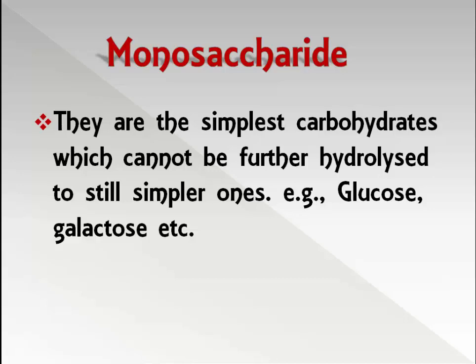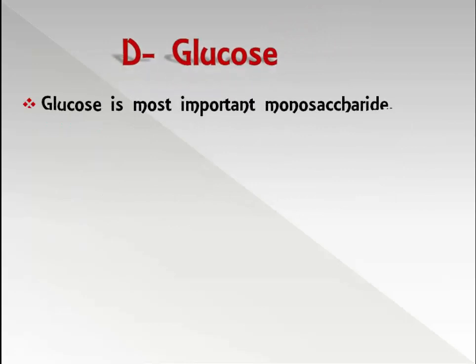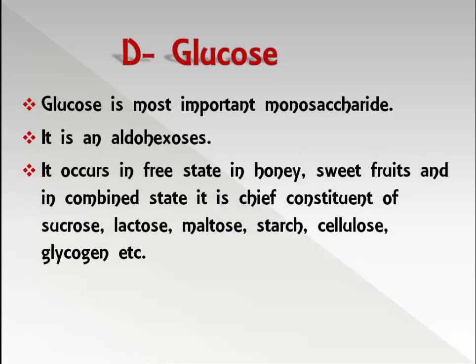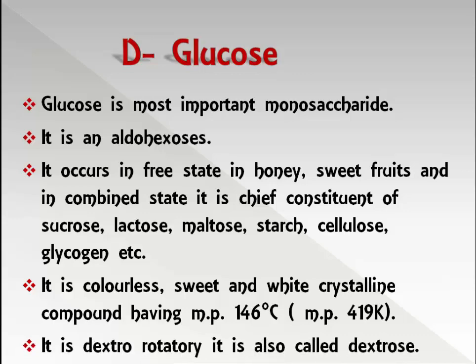Next we will see D-glucose. D-glucose is the most important monosaccharide. It is an aldohexose. It occurs in free state in honey and sweet fruits, and in combined state it is the chief constituent of sucrose, lactose, maltose, starch, cellulose, and glycogen. It is a colorless, sweet, white crystalline compound with a melting point of 146°C (419 K). It is dextrorotatory.